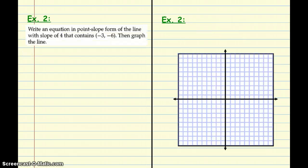All right, example 2. We're going to write an equation in point-slope form of the line with the slope of 4 that contains the point negative 3, negative 6. And then, just like example 1, we're going to graph it.